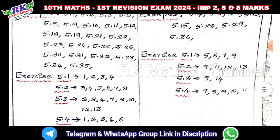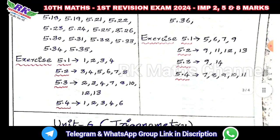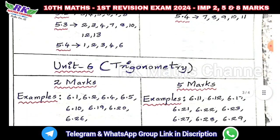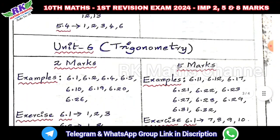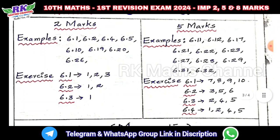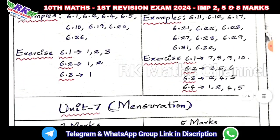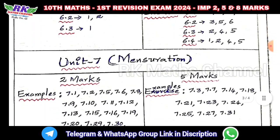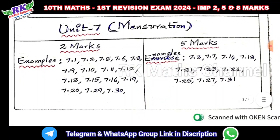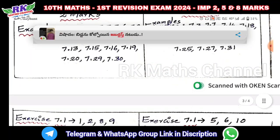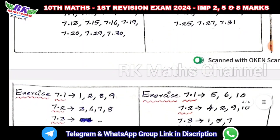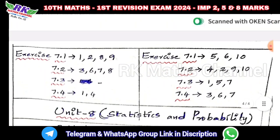The fifth lesson is important. Unit 6 — Trigonometry — important 2 mark and 5 mark questions. Unit 7 — Mensuration — important 2 mark and 5 mark questions.